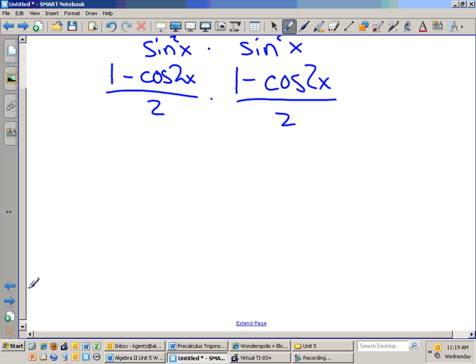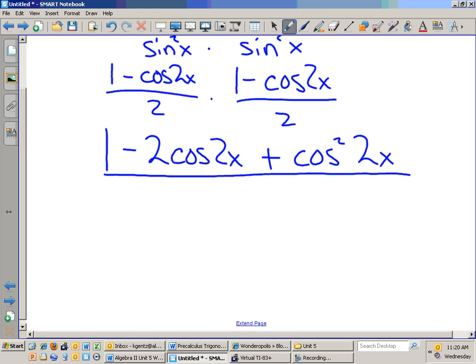So, and then this step we should get 2. Now we've got to FOIL, right? So, 1 times 1 is 1, minus 2 cosine of 2x plus cosine squared of 2x all over, what, 4 because 2 times 2 is 4.